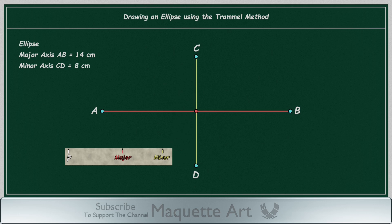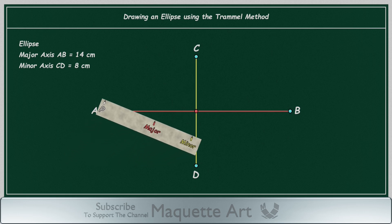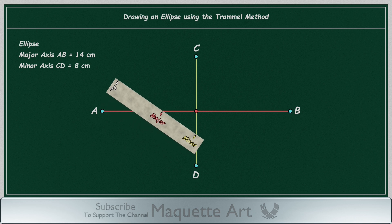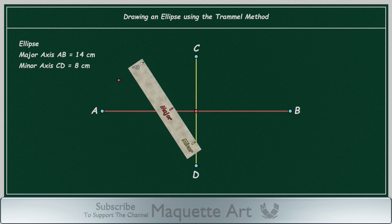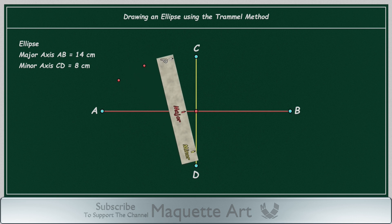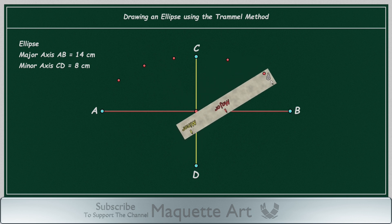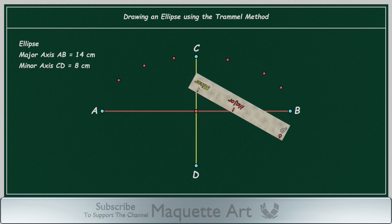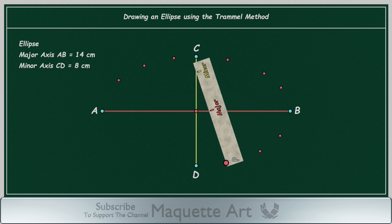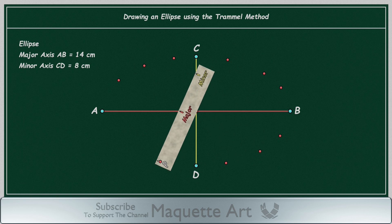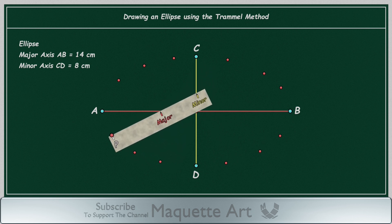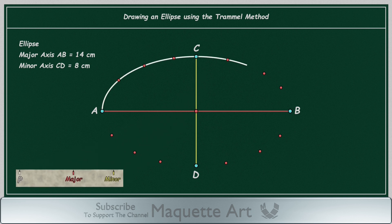Using the trammel is very simple. All you have to do is align the point 'minor' to the minor axis and the point 'major' to the major axis, then add a point at the mark P. Repeat those steps to get more points — move the trammel, align both marks to the axes, and add a point at mark P. After you have enough points, you can start connecting them manually by hand. You can increase the number of points to get more accurate results. Also, you can use a French curve or a flexible curve to connect the points.